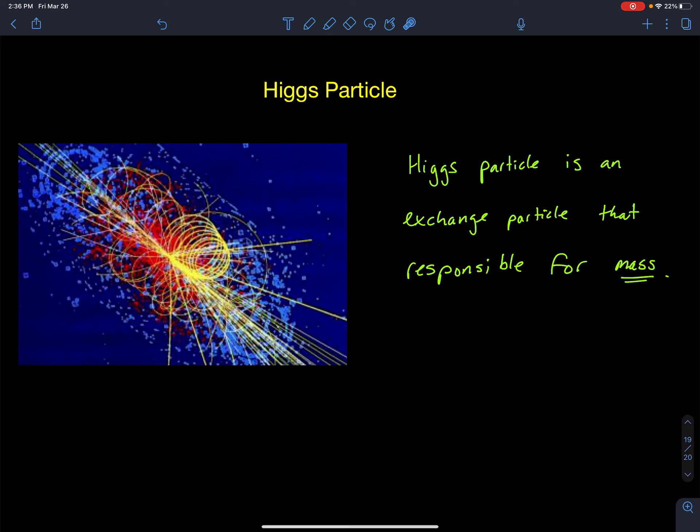So the Higgs particle is a massive particle, has a lot of energy, that defines the mass interaction. So what is mass? We can understand charge, we can understand spin, we can understand all these other quantum properties, but what gives matter mass?